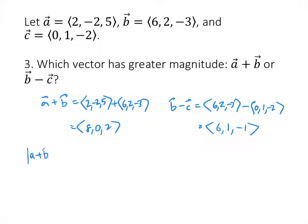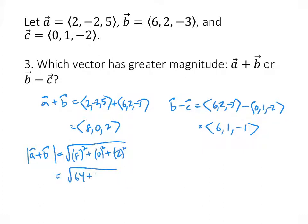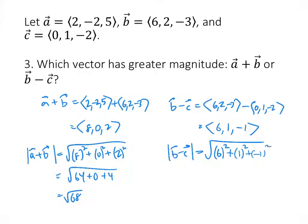The magnitude of A + B is √(8² + 0² + 2²) = √(64 + 0 + 4) = √68. The magnitude of B − C is √(6² + 1² + (-1)²) = √(36 + 1 + 1) = √38. Since 68 is bigger than 38, √68 is bigger than √38, so A + B is the vector with the greater magnitude.